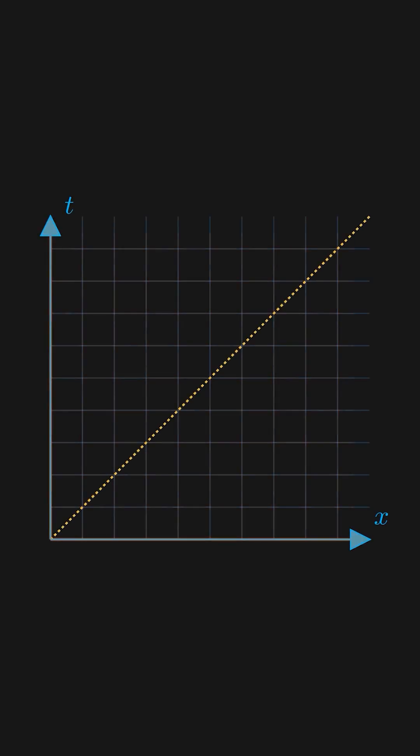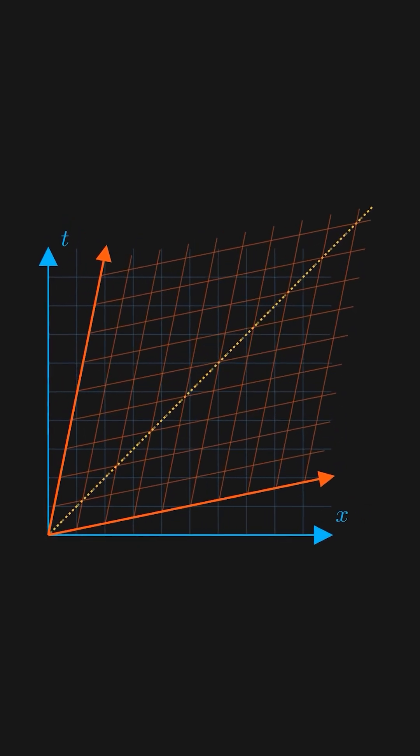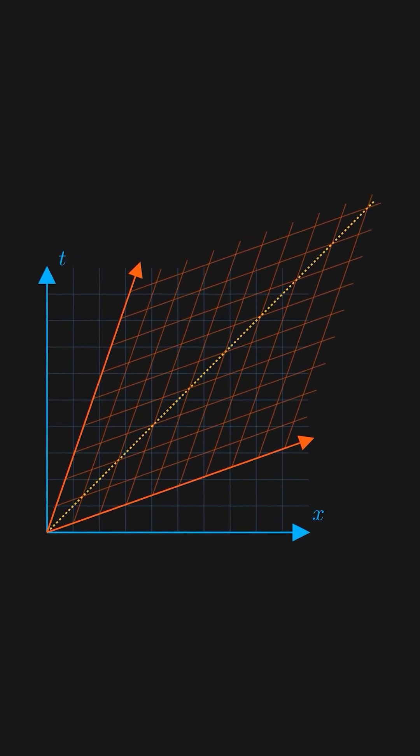In relativity, the rear clock is always ahead in the moving frame. When we Lorentz transform to get the coordinates of a moving frame, notice how their grid changes from a square-looking one into an oblique-looking one.